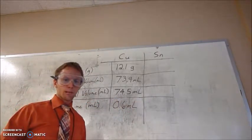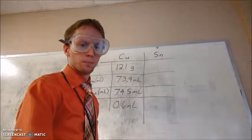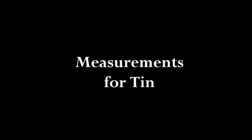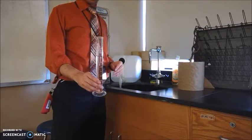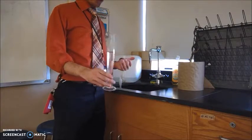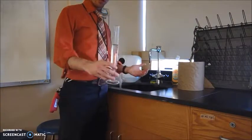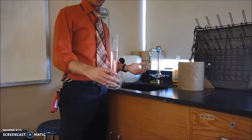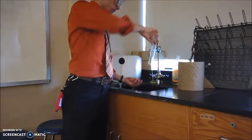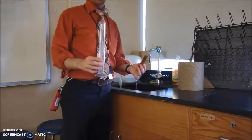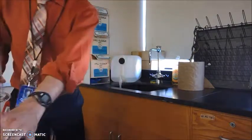Let's go ahead and do the same thing for tin now. A note about getting the metal out of your graduated cylinder. The best way I've found is just pour the graduated cylinder into your hand and catch the copper before it falls into the sink. Then you'll have to refill your graduated cylinder, which I'll do right now for the tin.